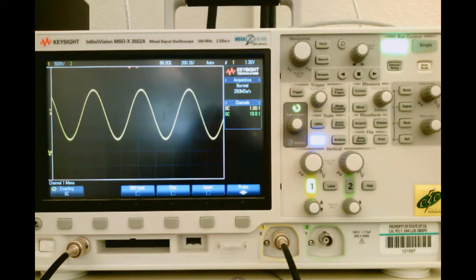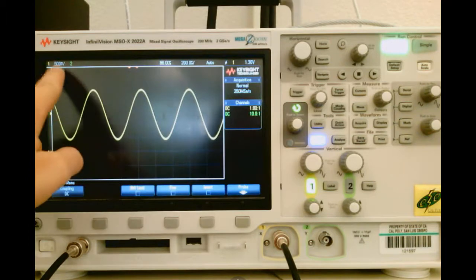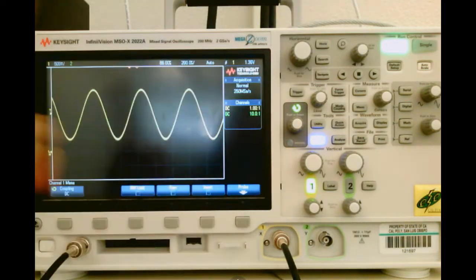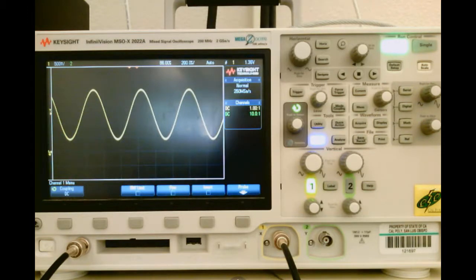Now, I can do that by eyeballing how many grid lines it's taking up and my voltage per division and time per division scales. However, that's only going to give me a very rough estimate.